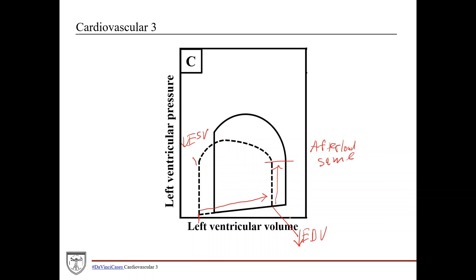As a result of having a decreased end diastolic volume, you have a decreased preload. As a result of decreased preload — remember, preload is essentially how much you've stretched out the heart muscles — if you don't stretch out the muscles much, it's not as powerful as usual. And so you see this dramatic decrease in left ventricular pressure.